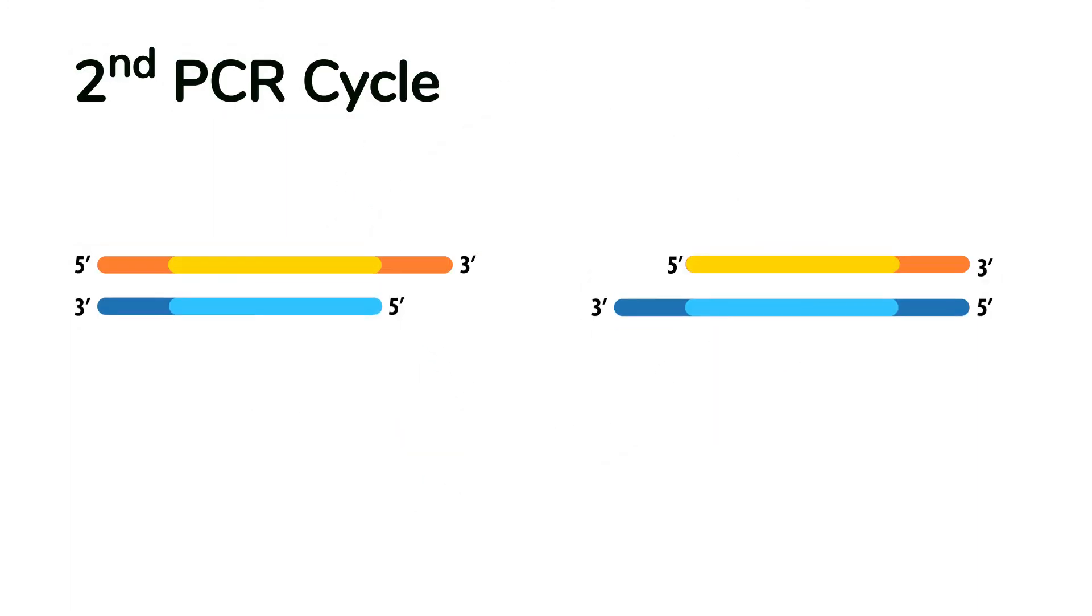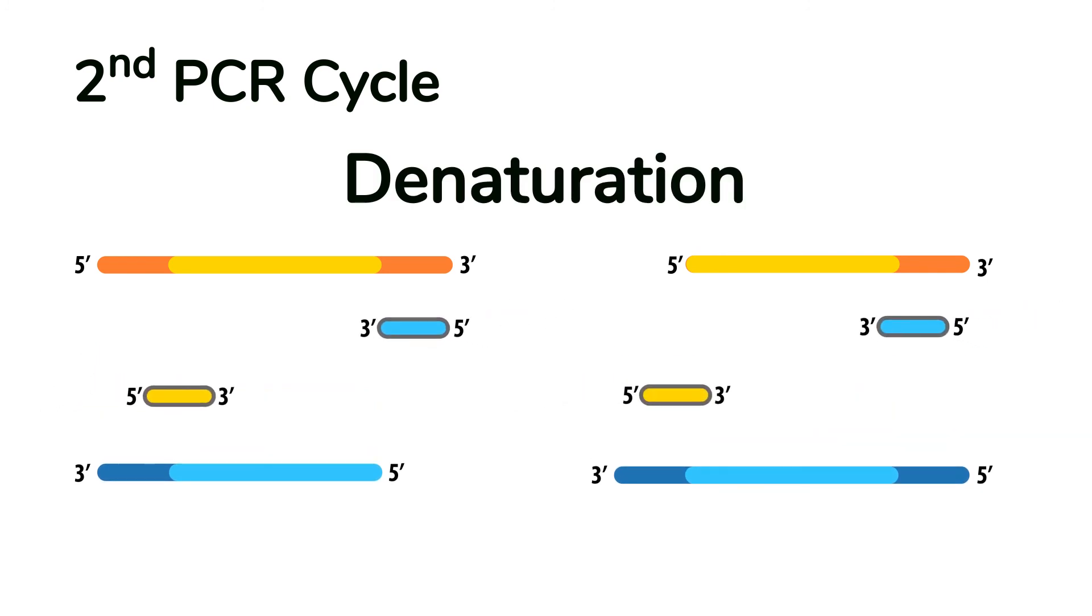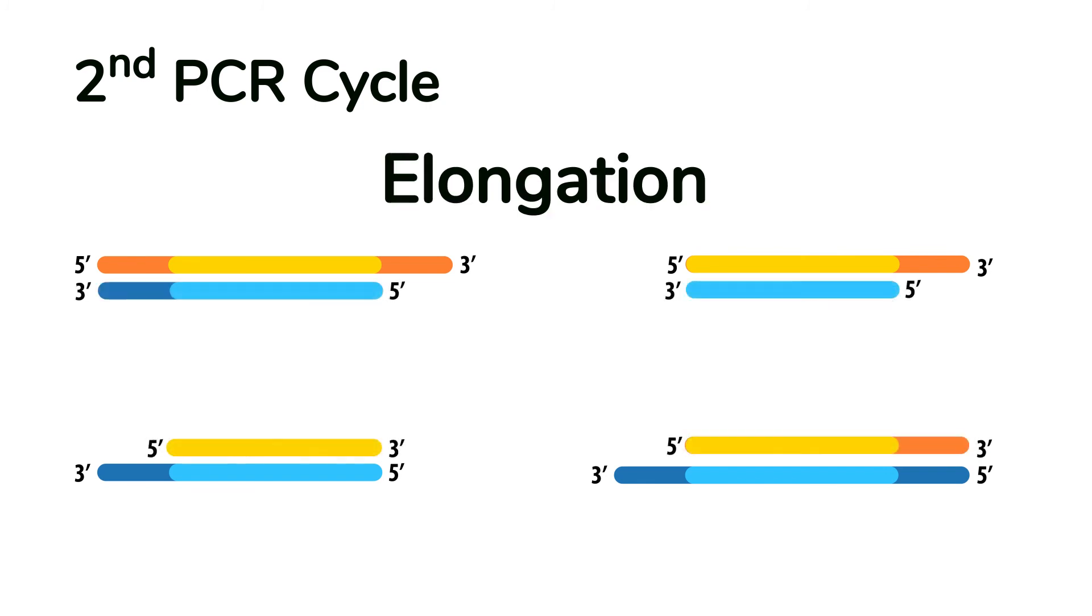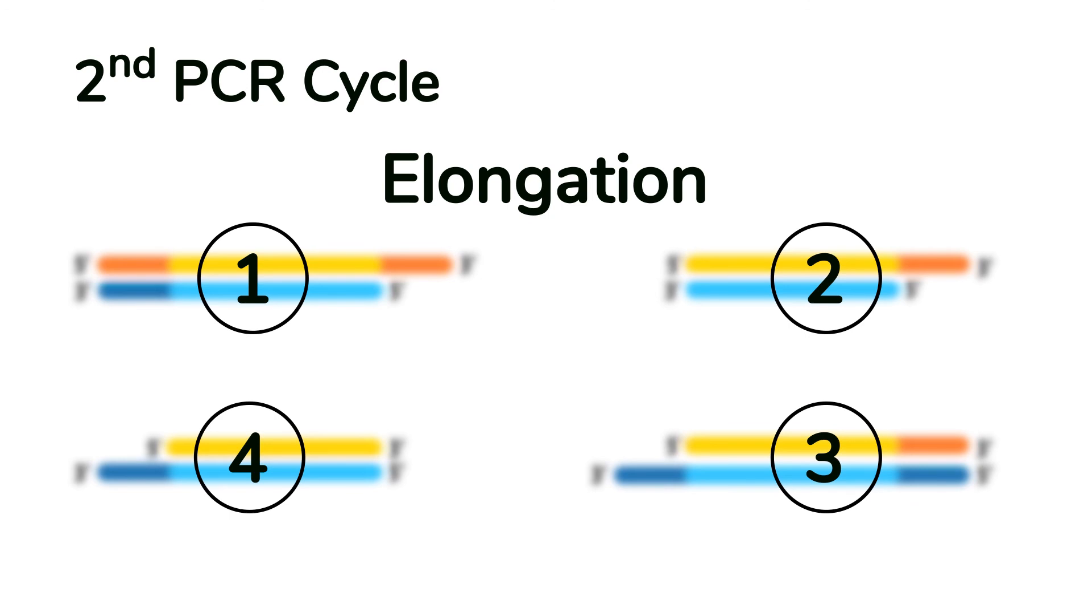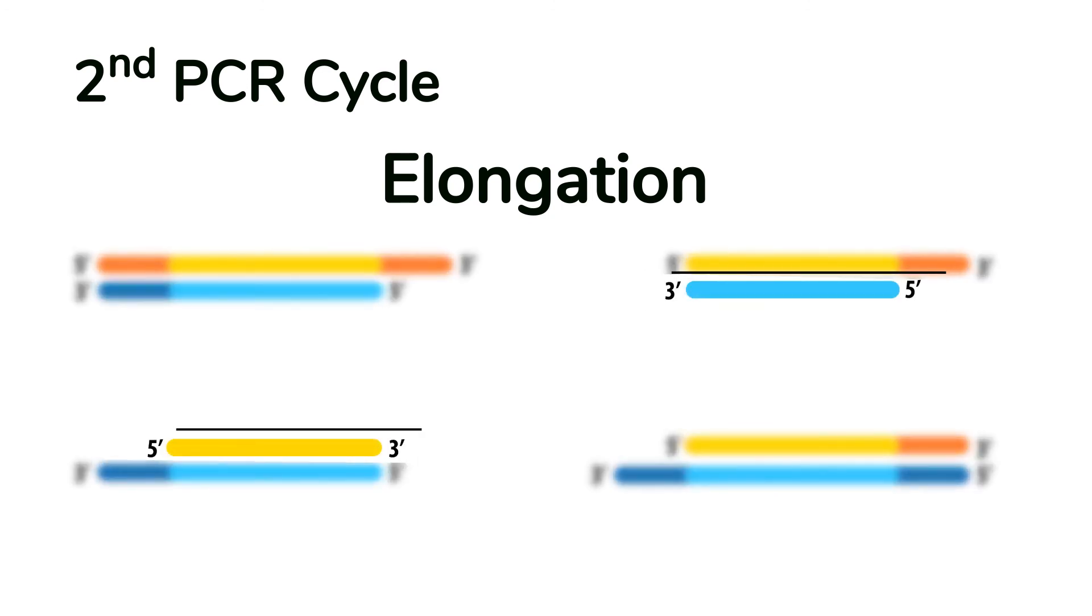This time, both the original strands and the newly made copies are used as templates. The result of the second cycle is four pieces of double-stranded DNA. Two of these are the desired products of the correct length. The remaining two again contain overhang products.